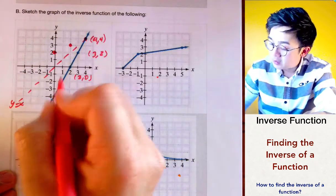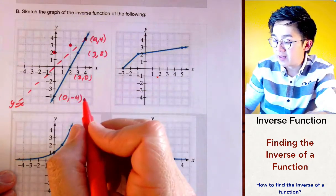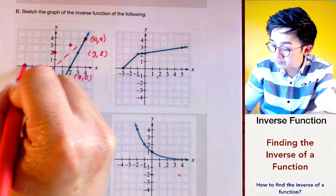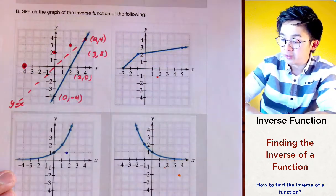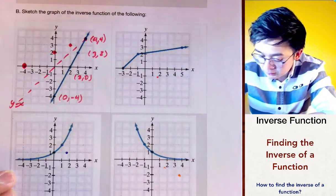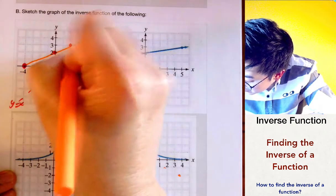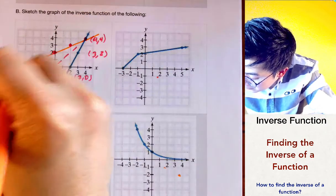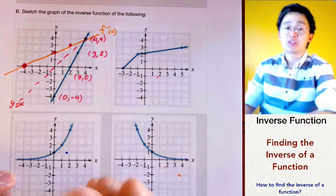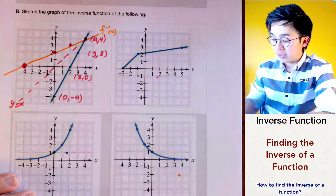For the last point, x is 0 and y is -4, so we interchange to get (-4, 0). Connecting all the plotted dots, we are able to produce our inverse function from the first graph.